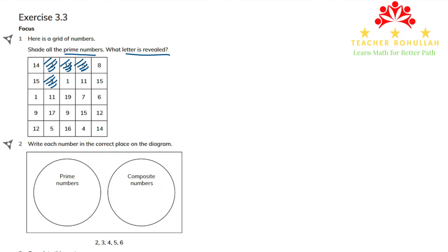1 is not a prime or composite number because it has only one factor — 1 times 1 equals 1, which is a duplicate factor. So 1 is neither prime nor composite. 11 is a prime number. 15 is not. 19 is a prime number. 7 is a prime number. 6 is not because it has more than two factors. 9 is not. 17 is a prime number.